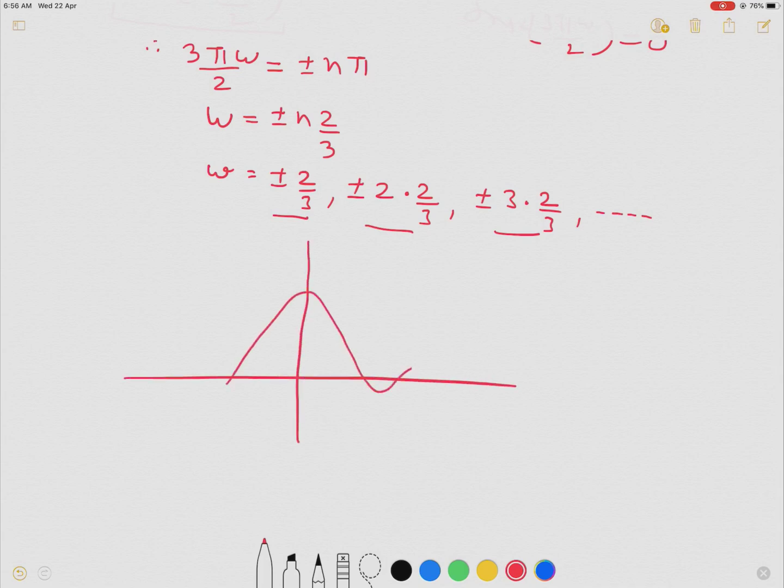Again, the peak is at 0. First crossing will be at 2 by 3. Second zero will be 4 by 3. Third zero will be 6 by 3. Similarly, on negative side and so on. This is omega. Here it is minus of 2 by 3, minus of 4 by 3, minus of 6 by 3.